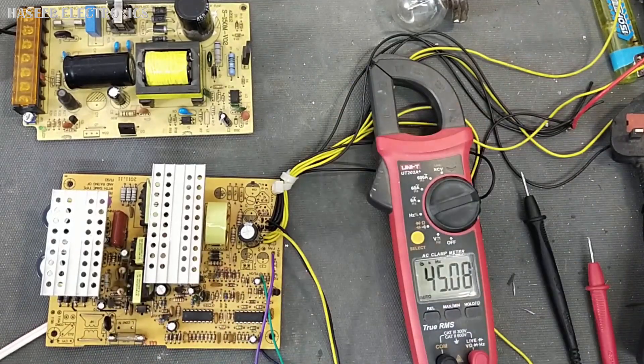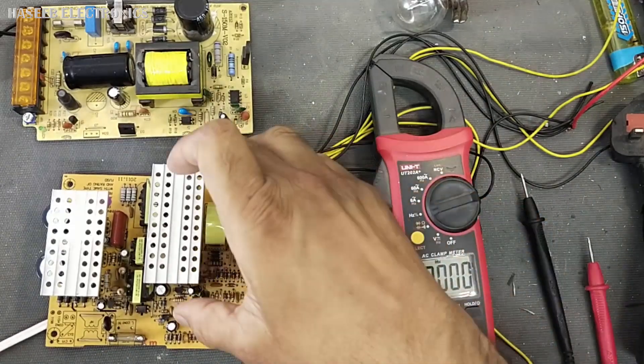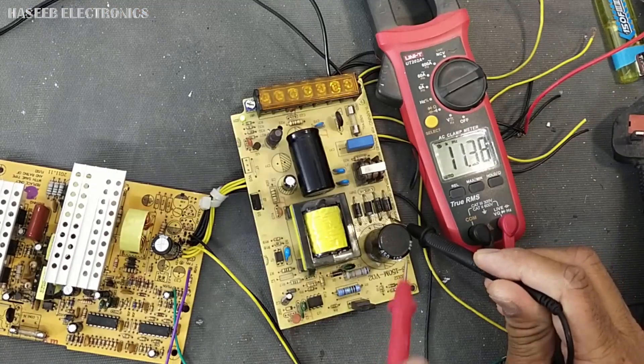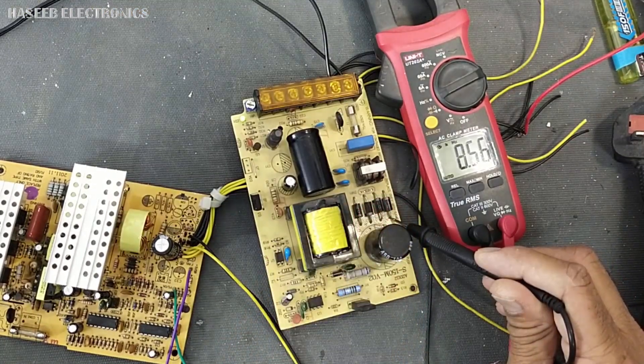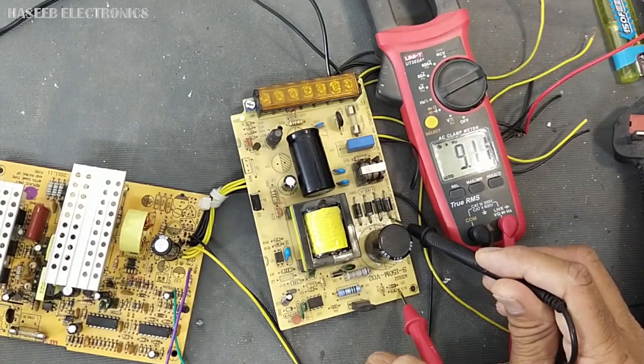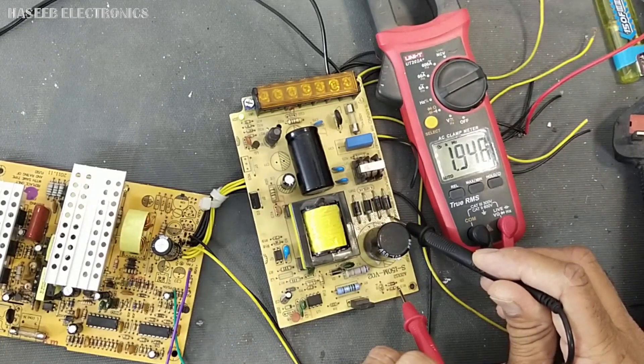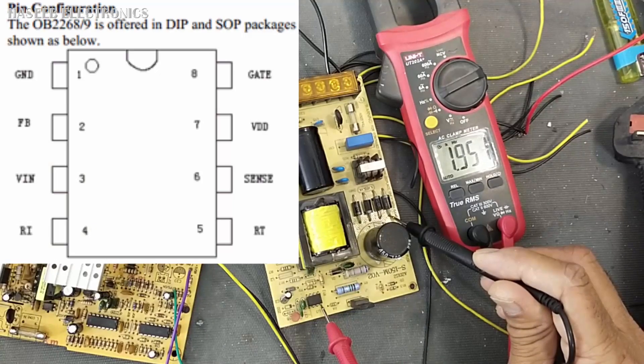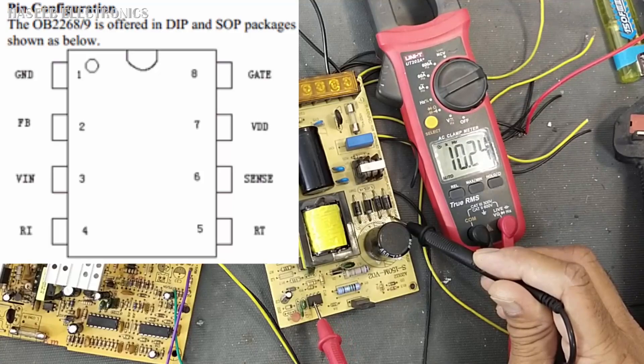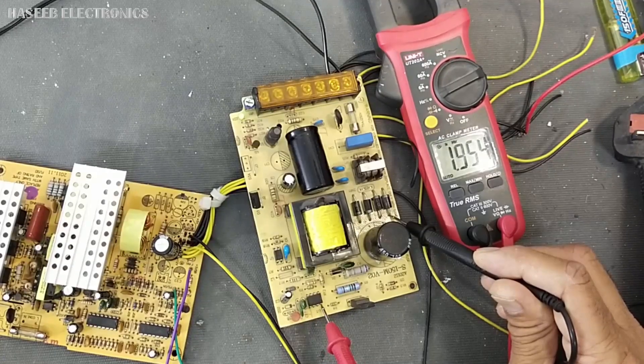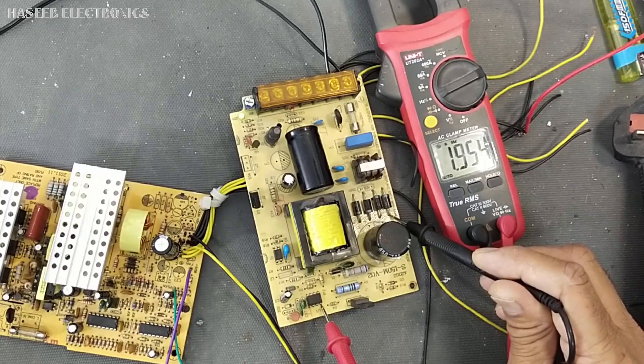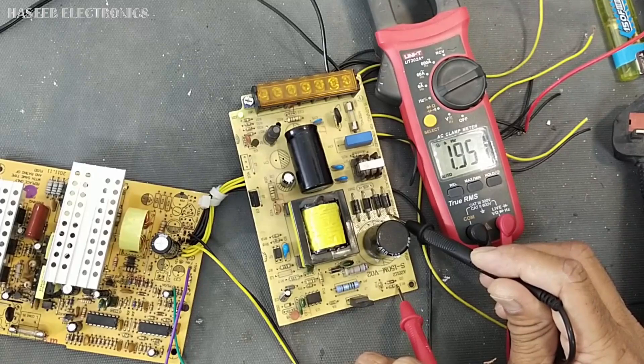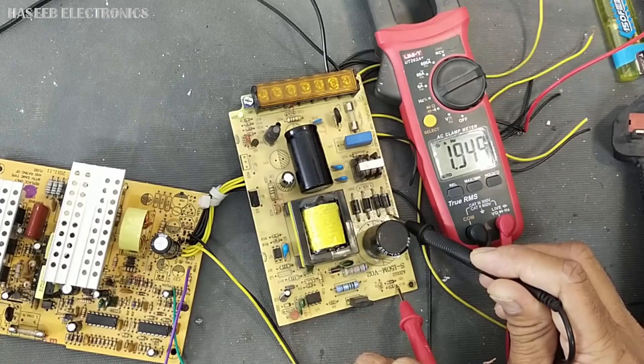Now we will check the other IC. That is OB2269. I will connect to ground. This is the ground terminal and we will connect to this drive resistor. This drive resistor that is output of pin number 8. This OB2269, its pin number 8 is drive signal. So it is 1.9 kilohertz with no load. It is switching at 1.95 kilohertz.